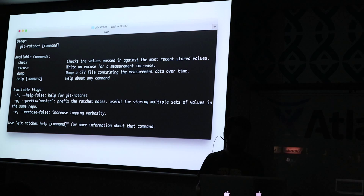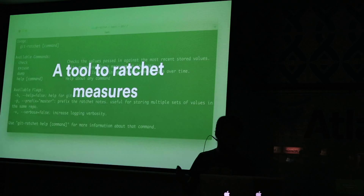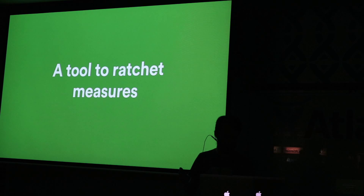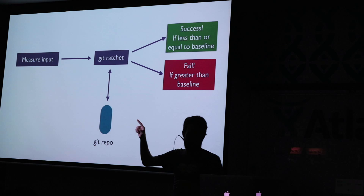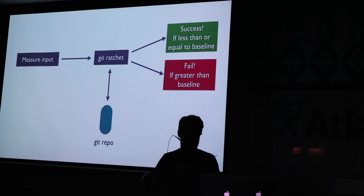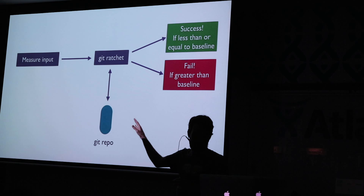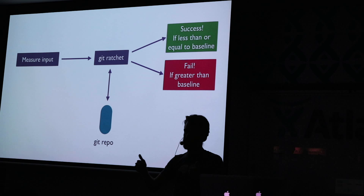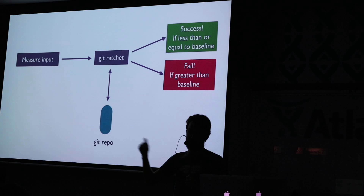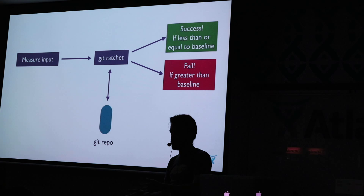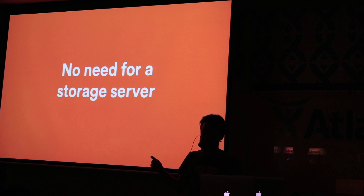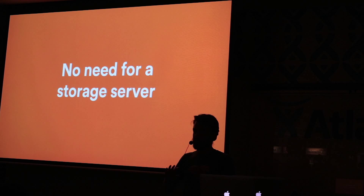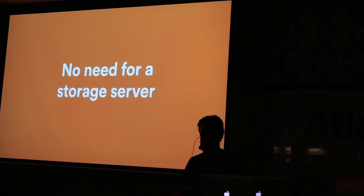To help solve this problem, I wrote a tool called Git Ratchet, which allows you to build ratcheted builds. A ratcheted build looks like this: you have your measures coming in, you feed them into Git Ratchet, and it talks to the Git repository to work out what the current baselines are. If the baseline has gone lower or stayed the same, you get a green build — things are not getting worse. But if it gets worse, the build fails, and someone has to go fix the new JSHint warnings they introduced or the extra page weight they added. There's no need for a storage server — all the data is stored in the Git repository inside Git Notes, so there's no mess created over your commit history. You also have the full history of your data over time going back through your commit graph.